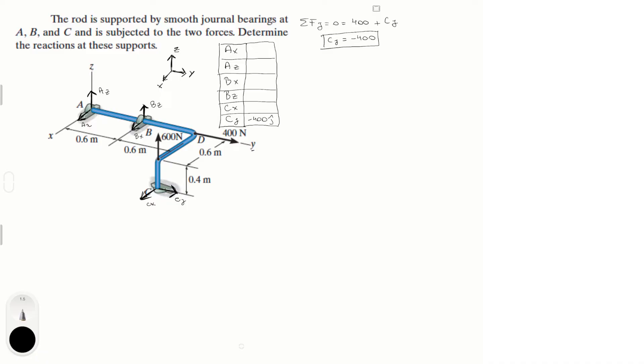Now let's do another equation. Sum of the forces in the z is equal to zero. In the z we have plus AZ plus BZ plus 600 equals zero. So minus AZ minus BZ is equal to 600. This is equation one.